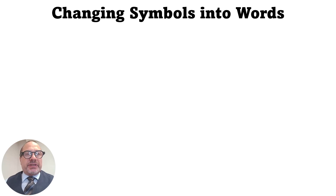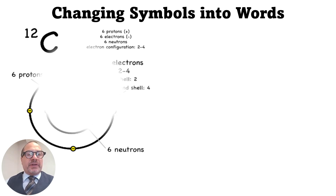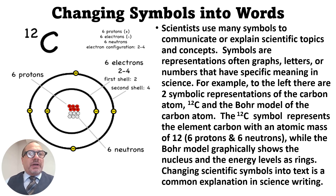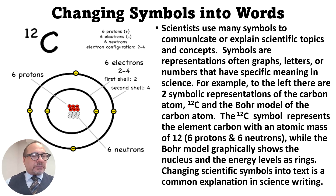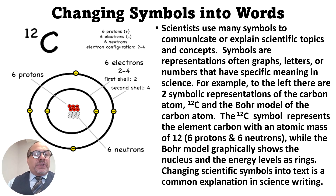One of the key examples of explanations you need to write in science is explaining symbols with words — or sometimes taking a word text and making a symbol out of it, such as graphs. Here we have the symbolic representations of the element carbon. '12C' — the 12 stands for the number of protons and neutrons together in the nucleus, and C is the symbol for carbon. Below that we have a model of the atom with rings around it. Many people think those rings show where the electrons are, but they actually are a graphic representation of how much energy the electrons have.